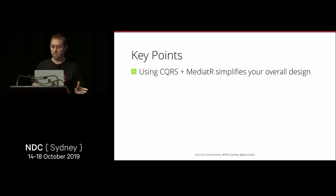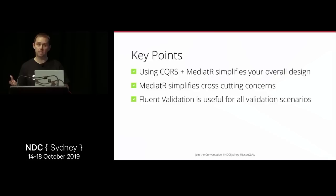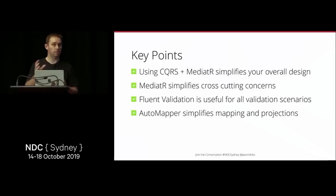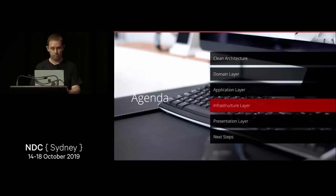Key points for the application layer: CQRS plus MediatR gives a single pipeline for cross-cutting concerns; FluentValidation works for both simple and complex validation scenarios; AutoMapper with tests simplifies mapping and projections; and the application layer is independent of infrastructure and data access concerns — we've been careful to use interfaces and keep implementations outside this project.